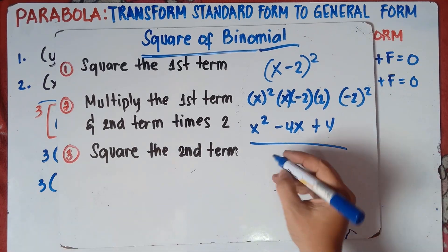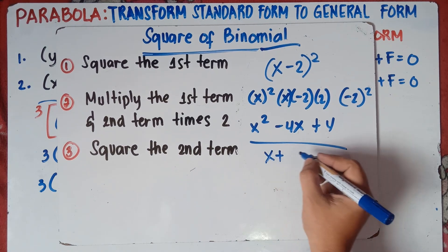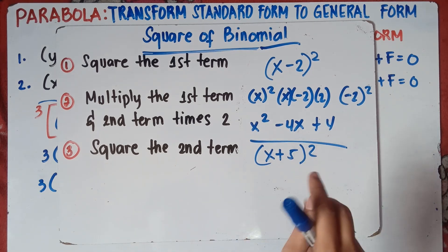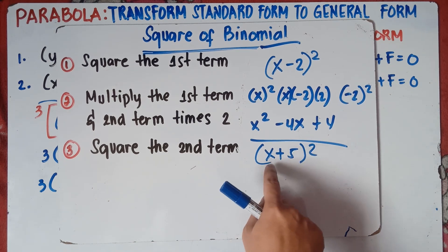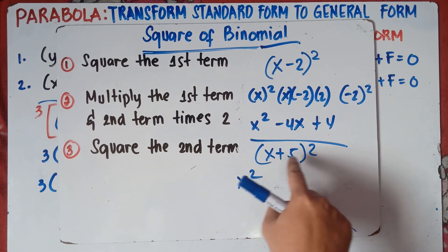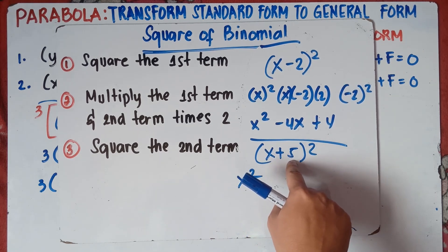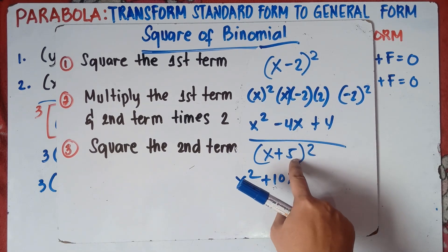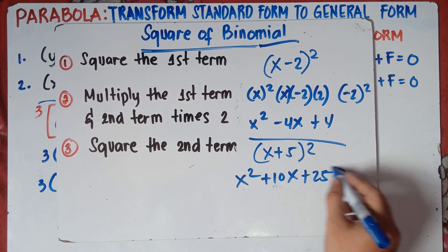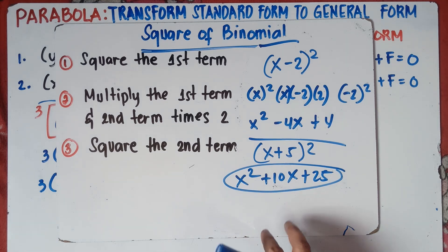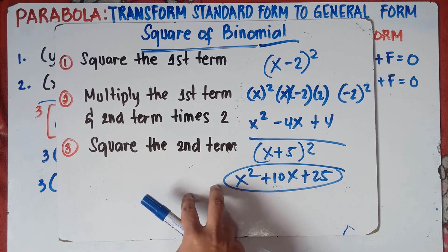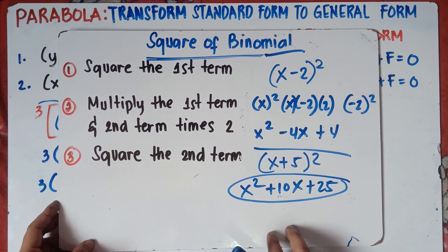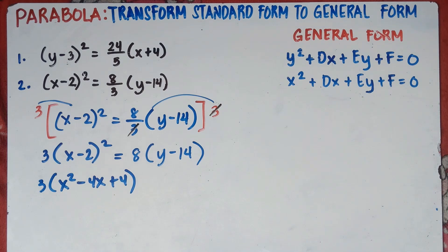Let's try an example of the square binomial: (x + 5)². Square the first term: x² . Multiply first and second terms times 2: x times 5 times 2 = +10x. Square the last term: 5 times 5 = 25. So (x + 5)² = x² + 10x + 25. That's it — really easy once you master it. I recommend mastering the square binomial since you'll deal with more equations.